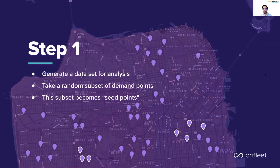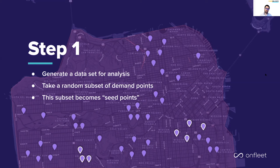To begin, we need to generate a data set for analysis. This could be based on historical data or be a prediction of demand based on demographic data — so you don't have to wait until you do deliveries in an area to actually run this analysis. But ultimately, these are demand points: destinations where we're delivering or picking up. We want to work with a fairly large data set, meaning thousands of potential demand points in a service area. Then we're going to take a random subset of these demand points, which will become our seed points — or our candidate seed points in this case.